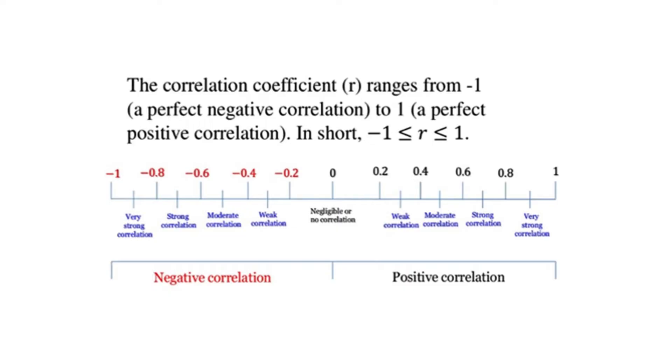A negative correlation means that as the value of one variable increases, the value of the other variable tends to decrease.